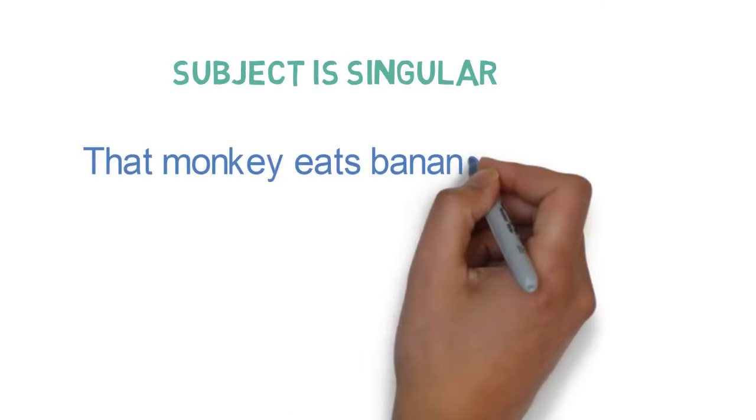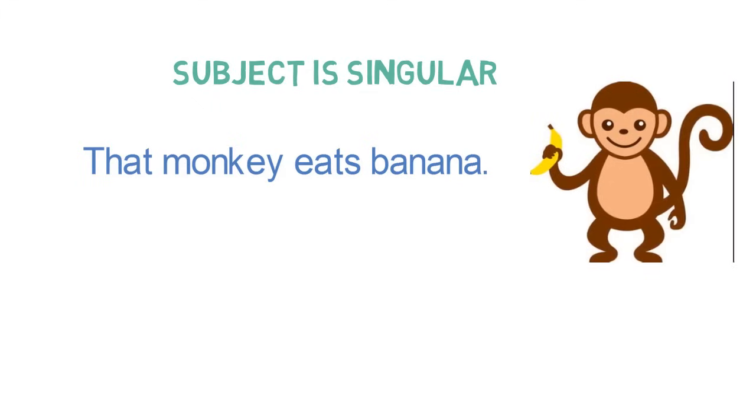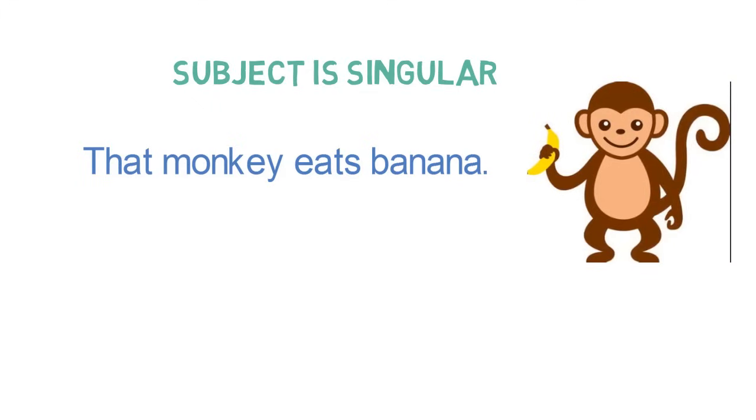Let's look into example where subject is singular. That monkey eats banana. Here, subject is monkey, which is singular. So, verb will also be singular. In this case, it is eats.